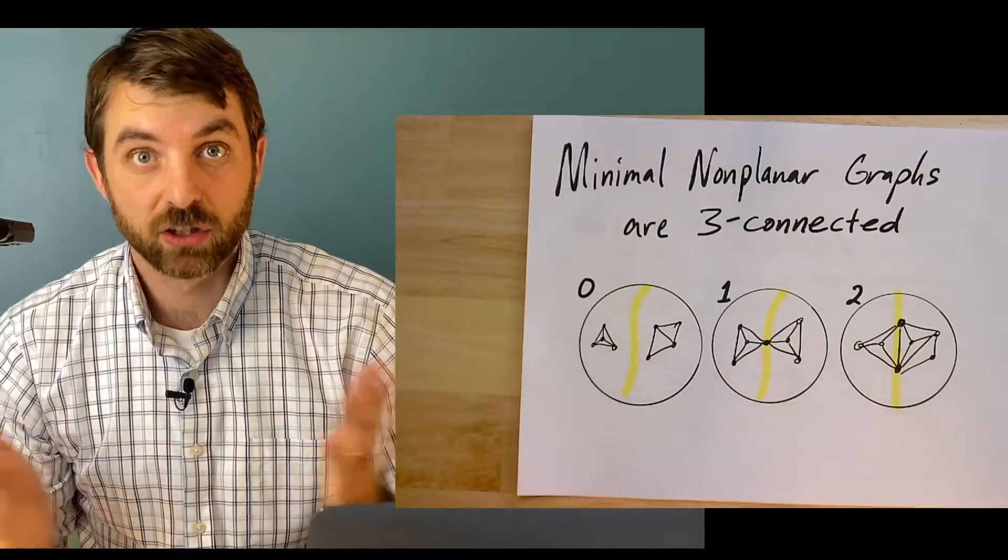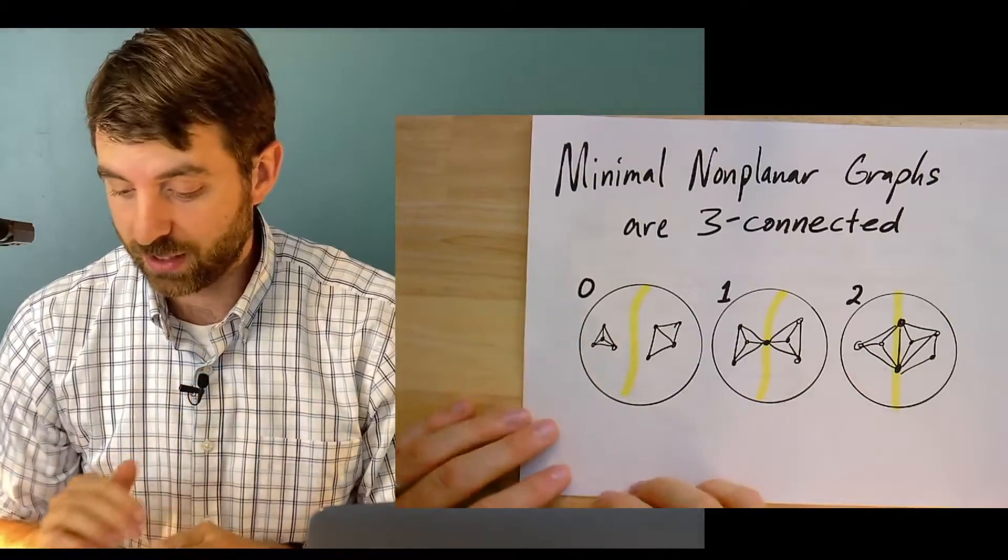I'm going to suppose I have a counterexample and I want to know a minimal one. Because if you're going to do a proof by contradiction and you suppose you have some counterexample, the questions you ask are always: what does this counterexample look like? What properties does it have? In the case of nonplanar graphs and a particular notion of minimality, the answer is it's going to be three connected.